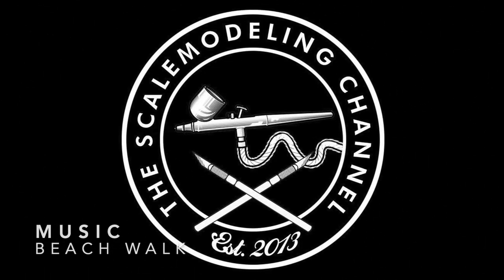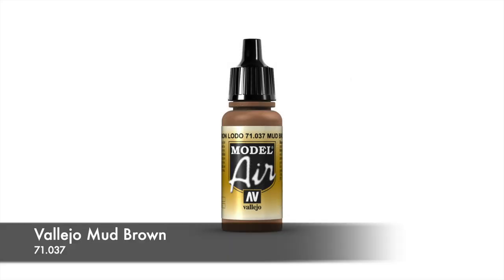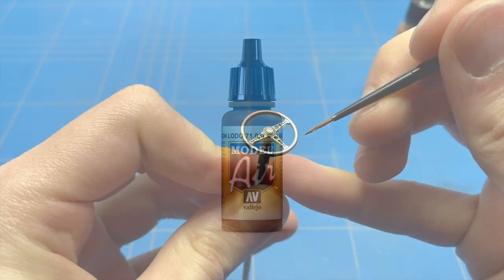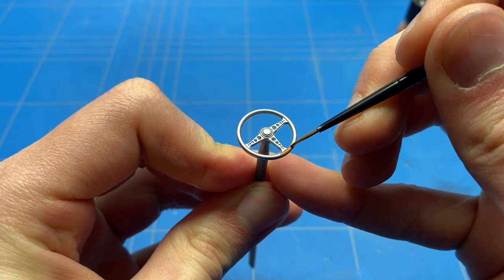On the Jaguar that I'm building, there was a small tutorial in the interior build video of wood graining a steering wheel. I figured not everybody would watch that video, so I'd do a separate tutorial on how I did this process.